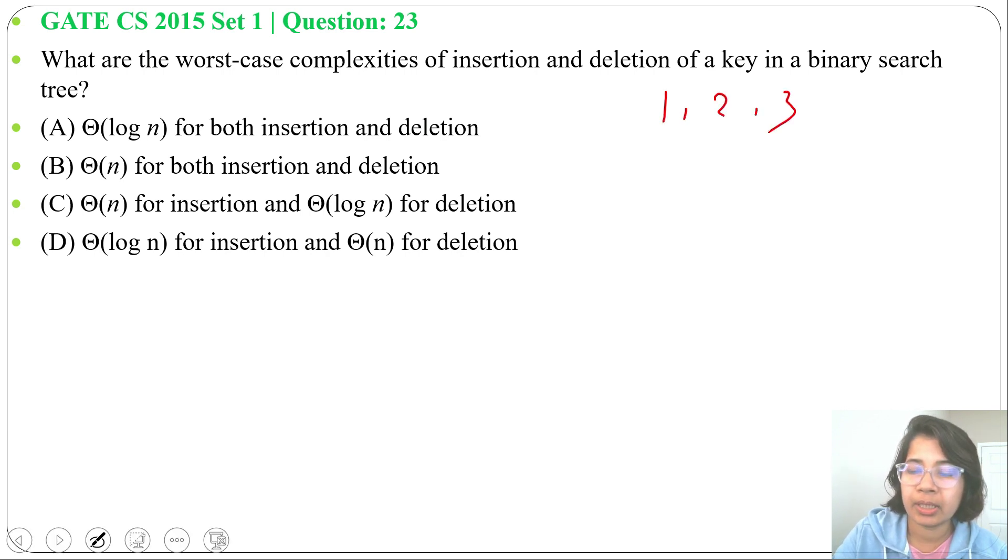Suppose we have 1, 2, 3. Now if we create binary search tree, we can create like this: 3, then 2, then 1. Or 1, then right child will be 2, right child will be 3.